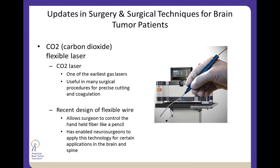Everybody always asks about laser and its role in surgery. In recent years, there's been an advancement in the use of a CO2 laser — one of the earliest gas lasers used in many surgical procedures — allowing precise cutting and coagulation. The recent creation of a flexible wire has brought this to the forefront in neurosurgery, since we usually work in small fields and small openings. Now we can hold this instrument like a pencil with a flexible wire draped over the wrist, enabling the neurosurgeon to apply this technology to certain tissues and tumors in the brain that weren't accessible before.